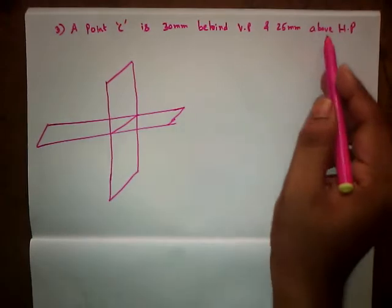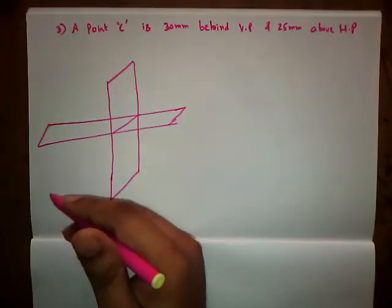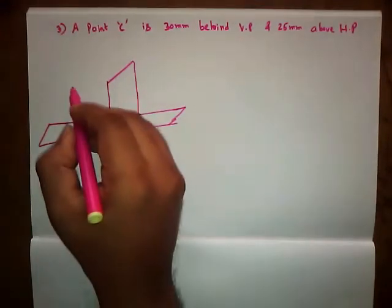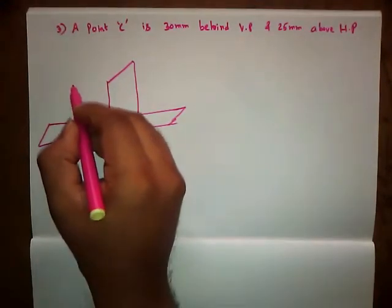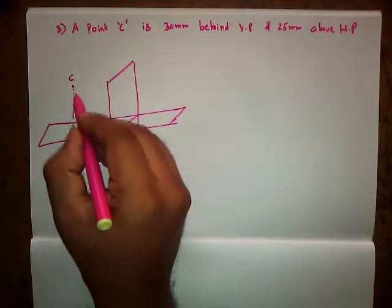So according to the question, behind and above. Behind means in the back, above means top. So behind and above, it is going to be the third quadrant. The name of the point is capital C. And let us join dotted lines into the plane.